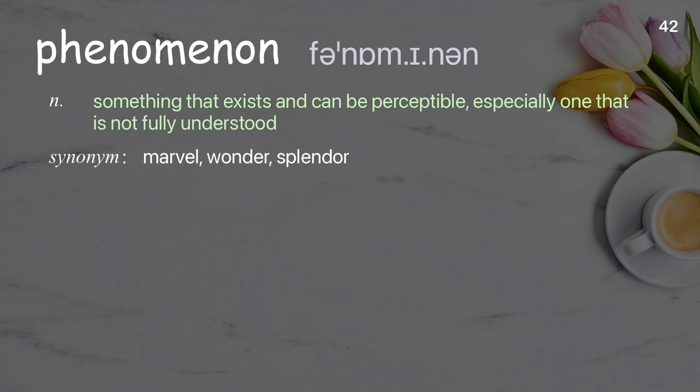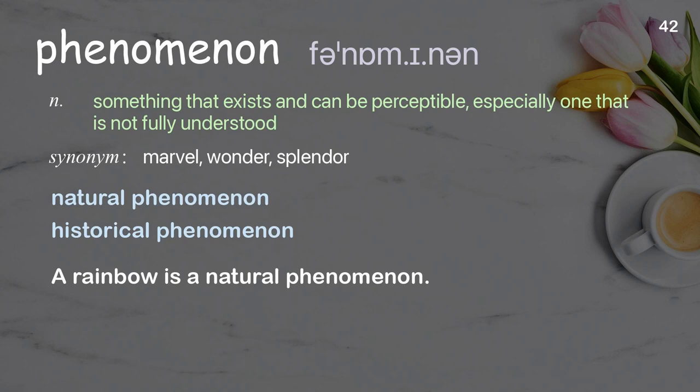Phenomenon. Something that exists and can be perceptible, especially one that is not fully understood. Examples: natural phenomenon, historical phenomenon. A rainbow is a natural phenomenon.